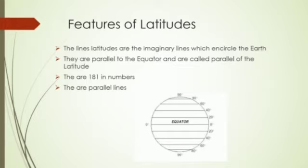As you know, the equator is situated in the middle of the two poles, North Pole and South Pole. And the parallels of latitude are 181 in number.